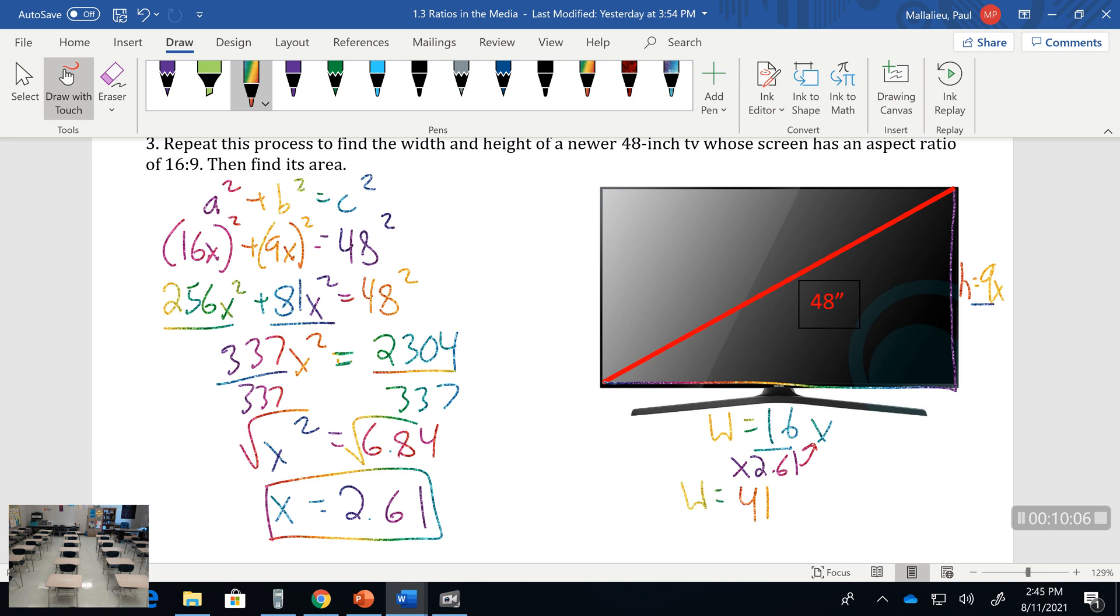Our height when we substitute in the x value of 2.61, so times 2.61, leaves us with a value of 23.5 inches.